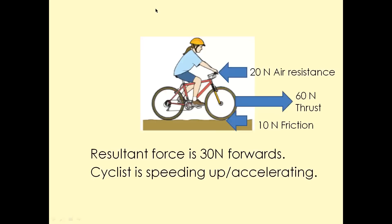The direction is forwards because the forward force is greater than the backward forces. This tells us the cyclist is speeding up, or accelerating. Accelerating means the object is speeding up. And if the object is slowing down, we say it is decelerating. So: accelerating = speeding up; decelerating = slowing down.